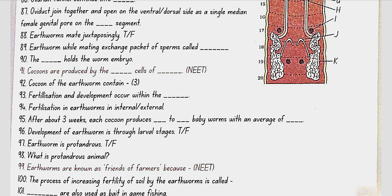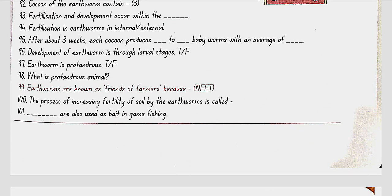Fertilization in earthworms is external, occurring in the cocoon. After about 3 weeks, each cocoon produces 2 to 20 baby worms with an average of 4. Development of earthworm is not through larval stages — false. Earthworm is proandrous — yes, true. A proandrous animal is one where male organs develop before the corresponding female organs, thus inhibiting self-fertilization. Earthworms are known as friends of farmers because they make burrows in the soil, making it porous, which helps in respiration and penetration of developing plant roots. The process of increasing soil fertility by earthworms is called vermicomposting. Earthworms are also used as bait in game fishing.